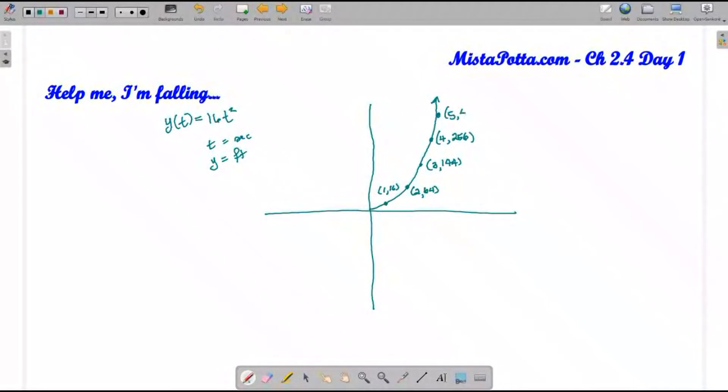After I've fallen five seconds, five squared is 25, and 25 times 16 is 400 feet. So what I've got here is the height that I fall depends on the time that I've fallen, and I have a set of points here.